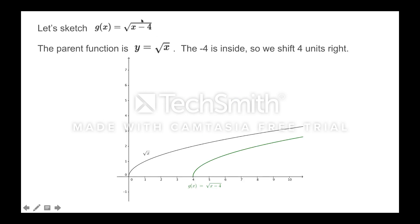What if we wanted to graph square root of (x − 4)? The first thing we have to decide is which parent function we're using — it's probably one of those seven basic graphs. We know how to graph y = √x. That minus 4 is inside the function, inside the square root. Anything inside is a horizontal change. So we're going to take the original graph y = √x and scoot it over to the right 4 units. Why is it right? Because negatives go right, positives go left.